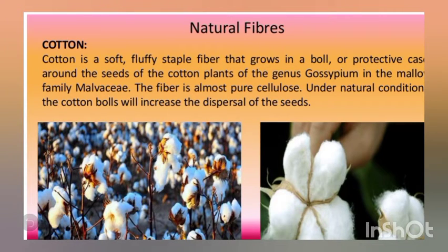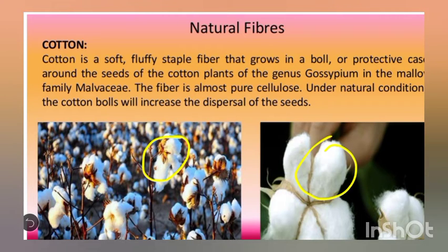First we will talk about the natural fiber cotton. You can see these are called cotton balls. Cotton is whitish in color and soft. Mostly, cotton plants are grown in black soil and they need a dry and humid climate for their growth.